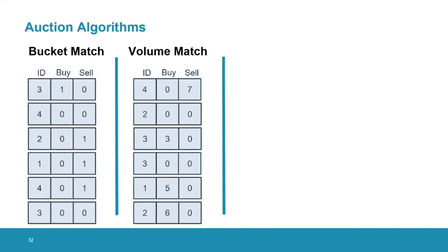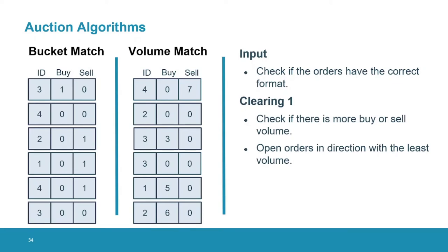Now we see how the orders are matched using an example. The first step is the input correctness check, which all orders in the list have already passed. Then to match the orders, we have a clearing phase one, in which we start by aggregating all the buy volume and all the sell volume. In the bucket match example, we have a total buy volume of one unit and a total sell volume of three units. We compare these two total volumes and reveal which one is larger. We then observe that the orders in the direction with least total volume will all be matched, so we can open all the information in that direction.